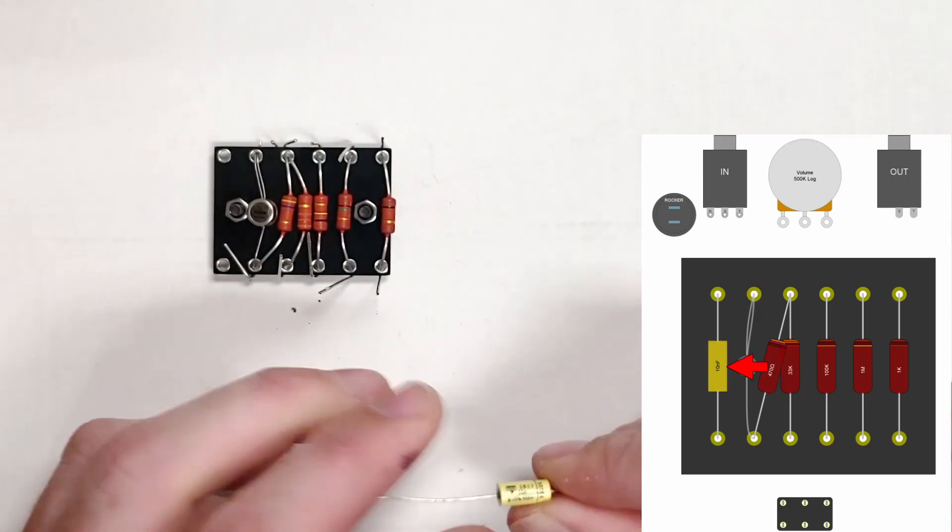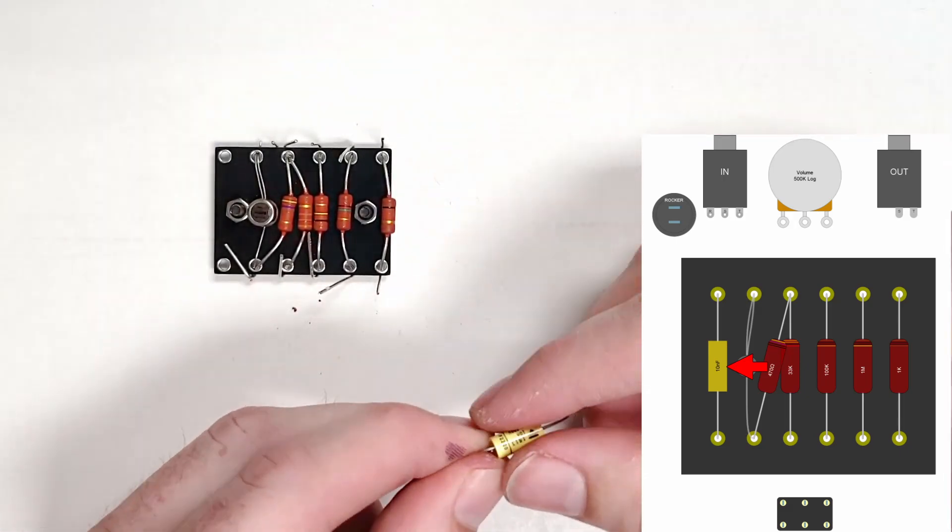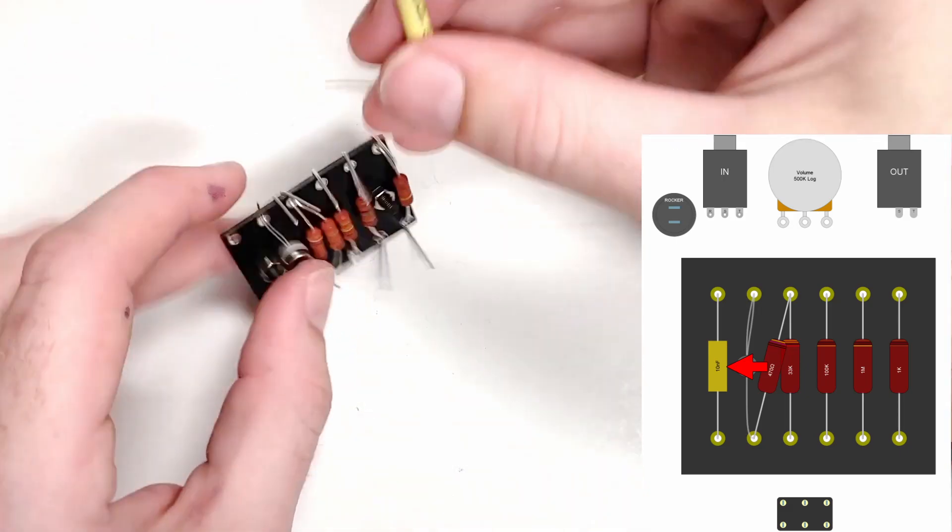Once the resistors are installed, we follow the same process with the capacitors, making sure to properly orient the electrolytics.